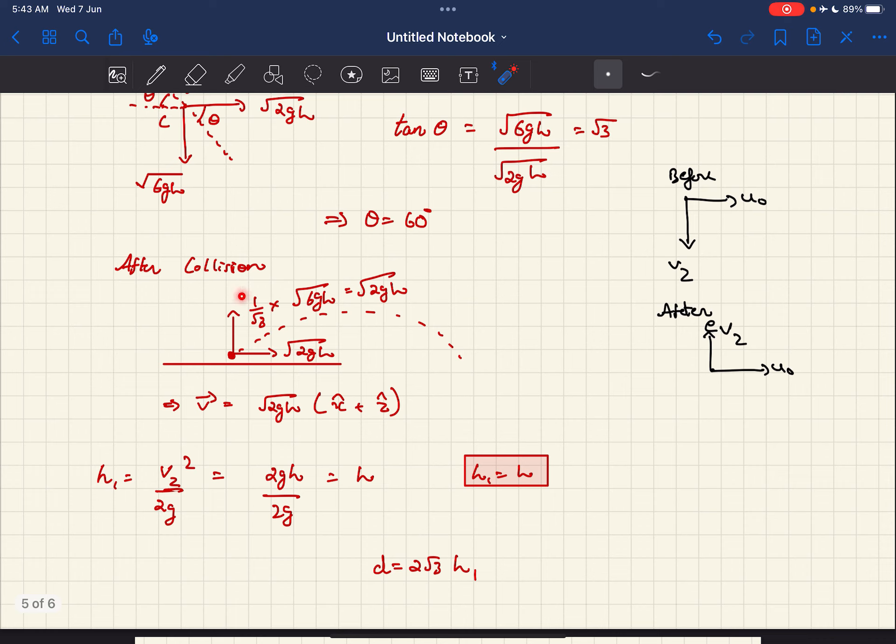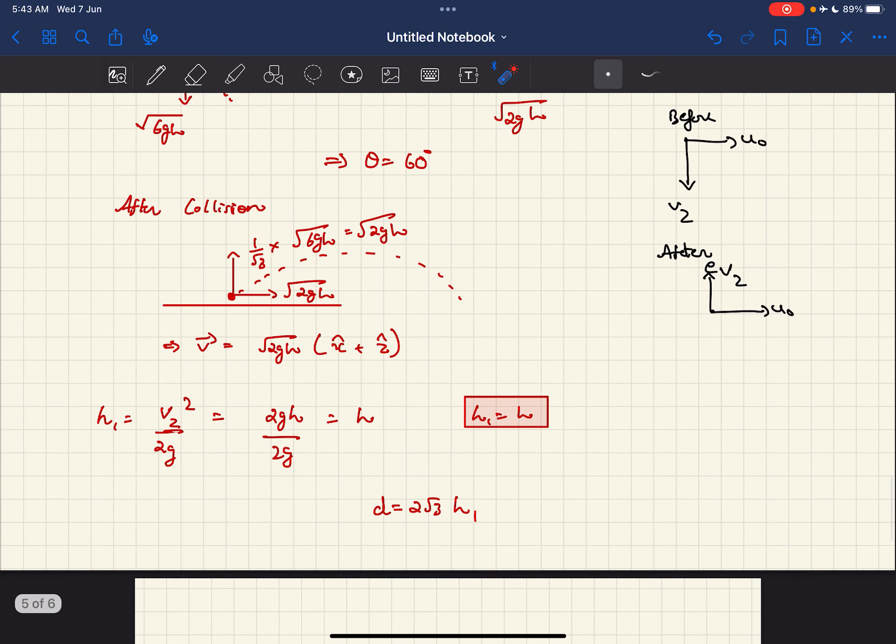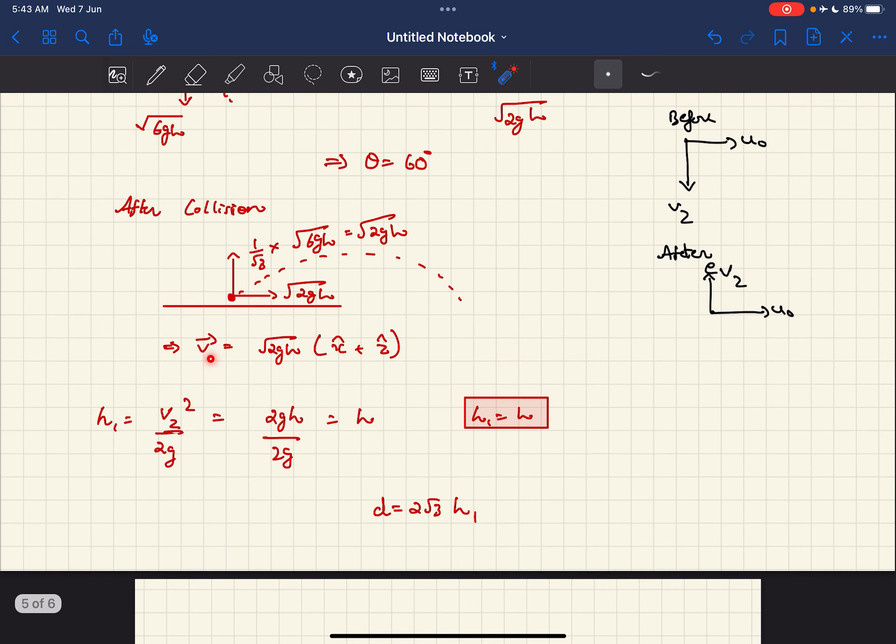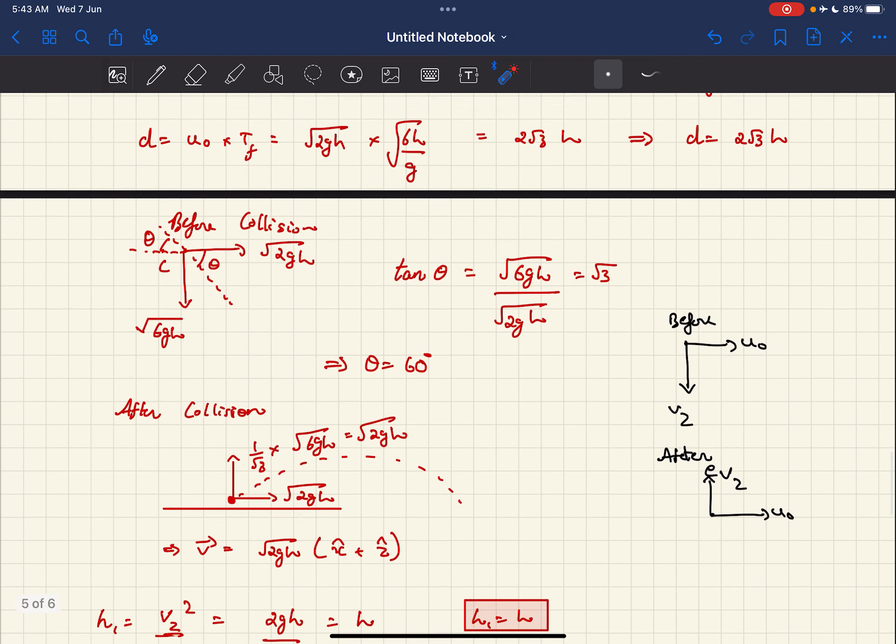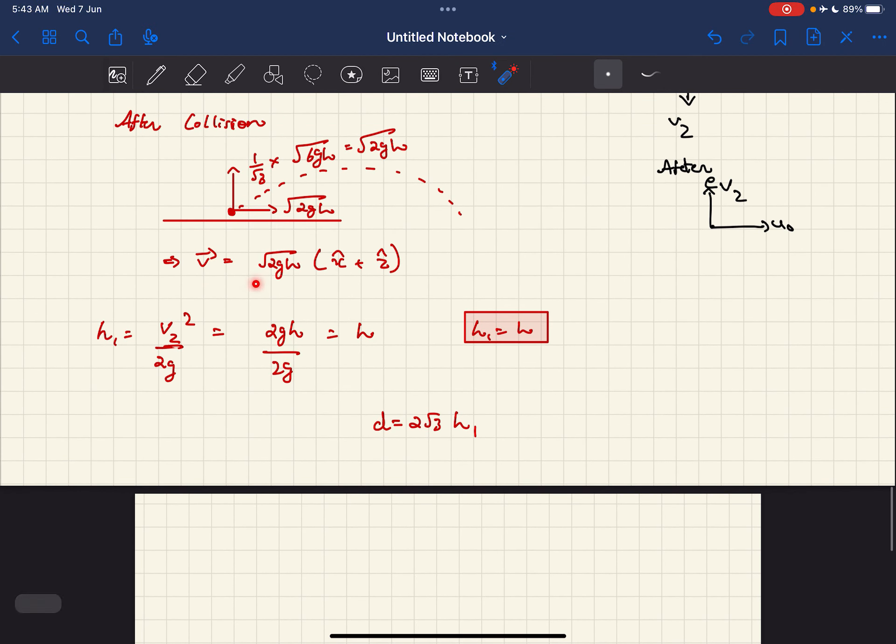After collision, E is given to be 1/√3 in this case. So it becomes 1/√3 times √(6GH), which is √(2GH). So the final velocity after collision at point C becomes √(2GH) times (x̂ + ẑ).